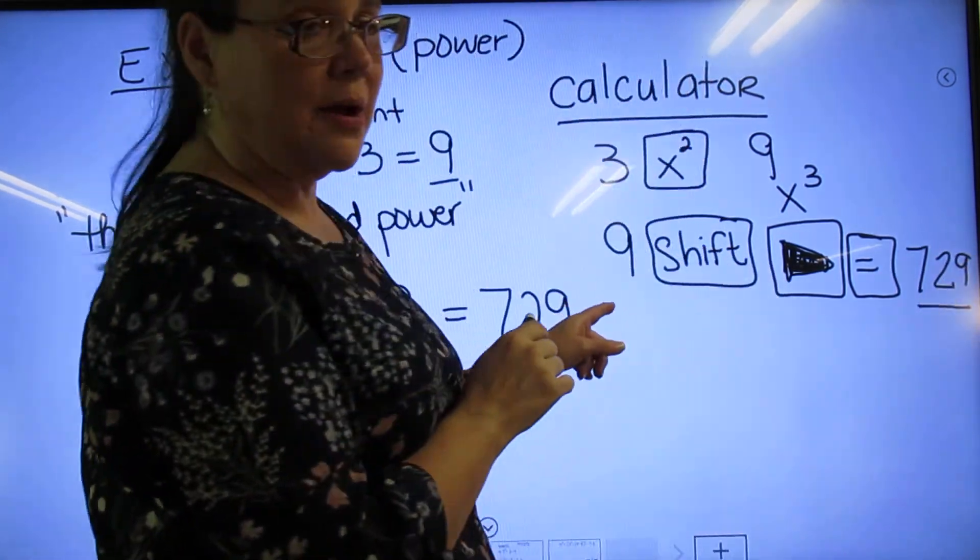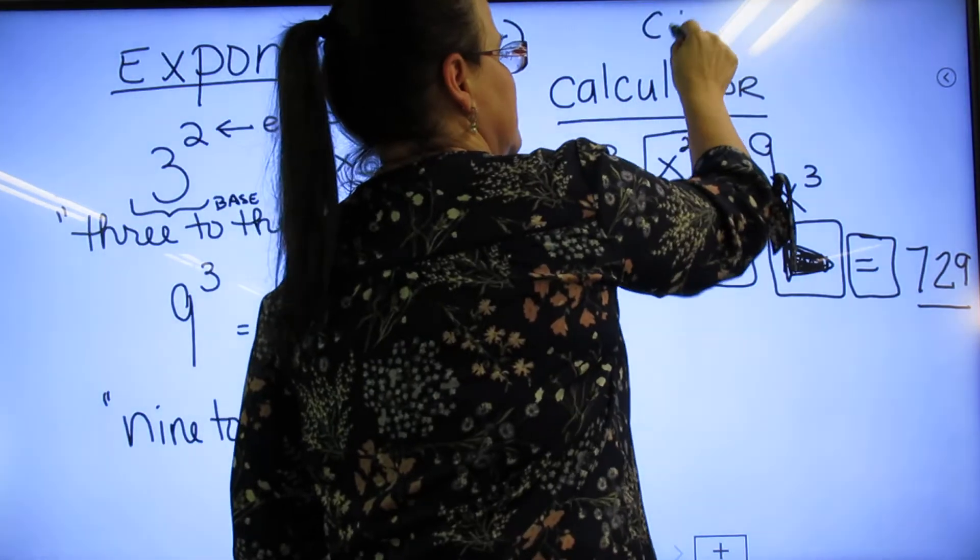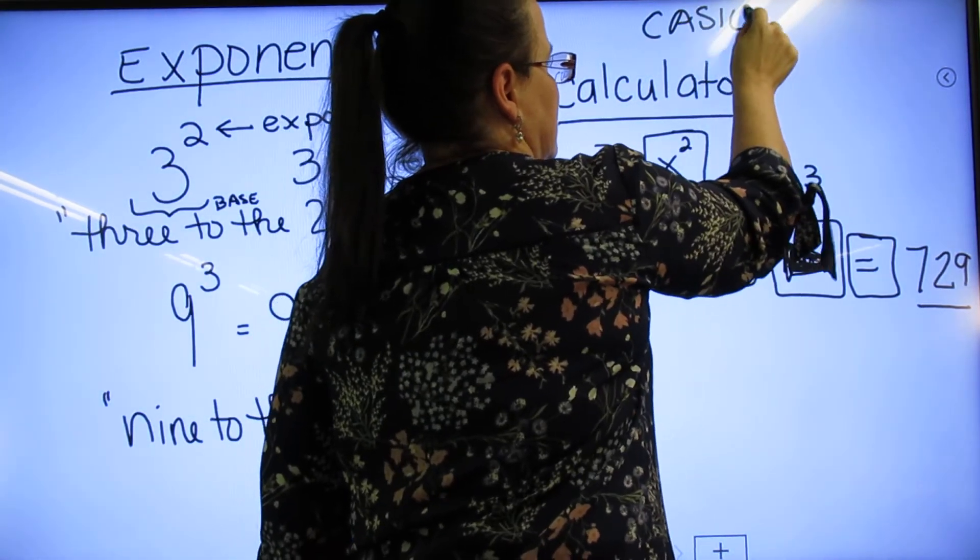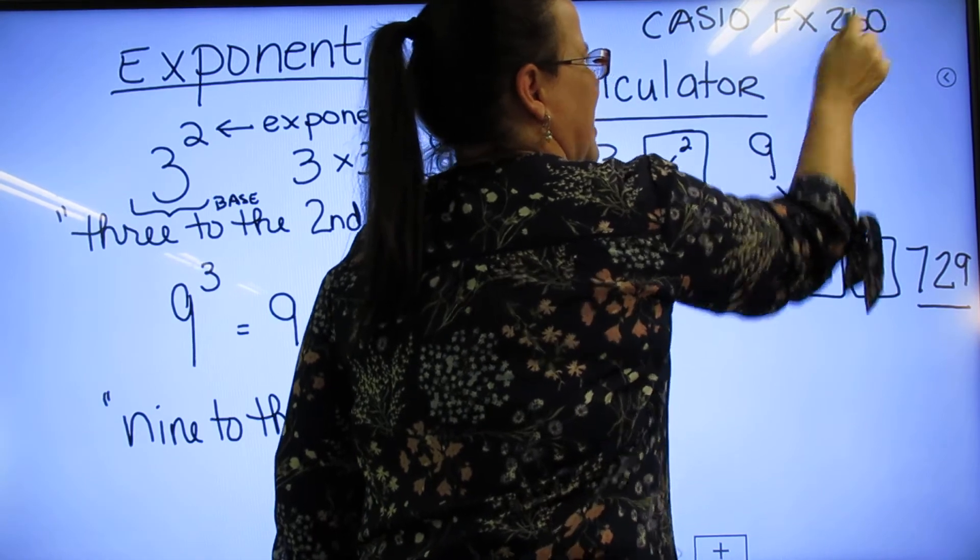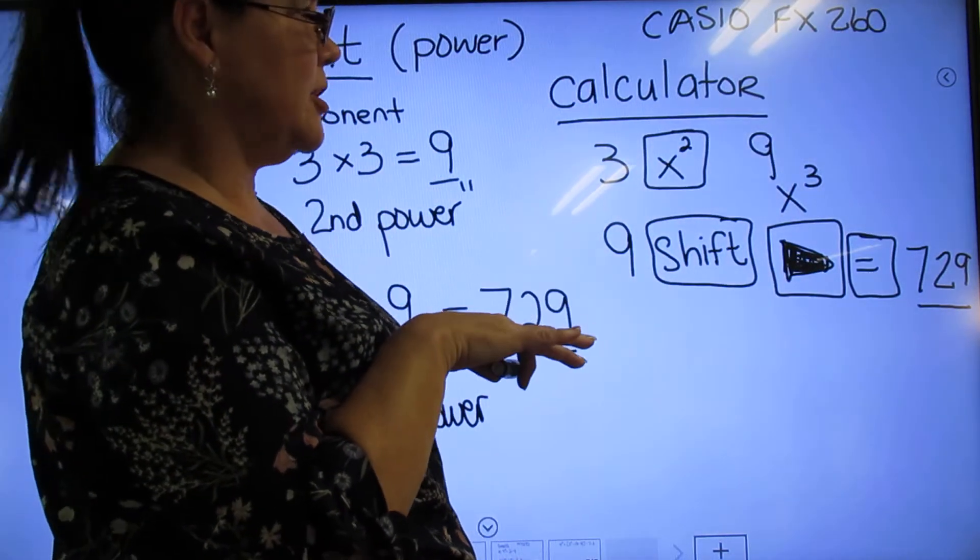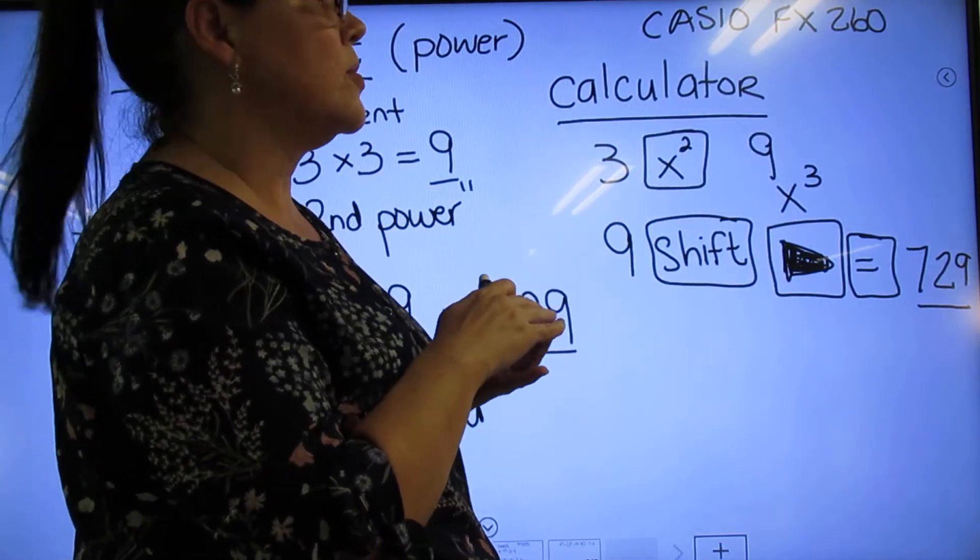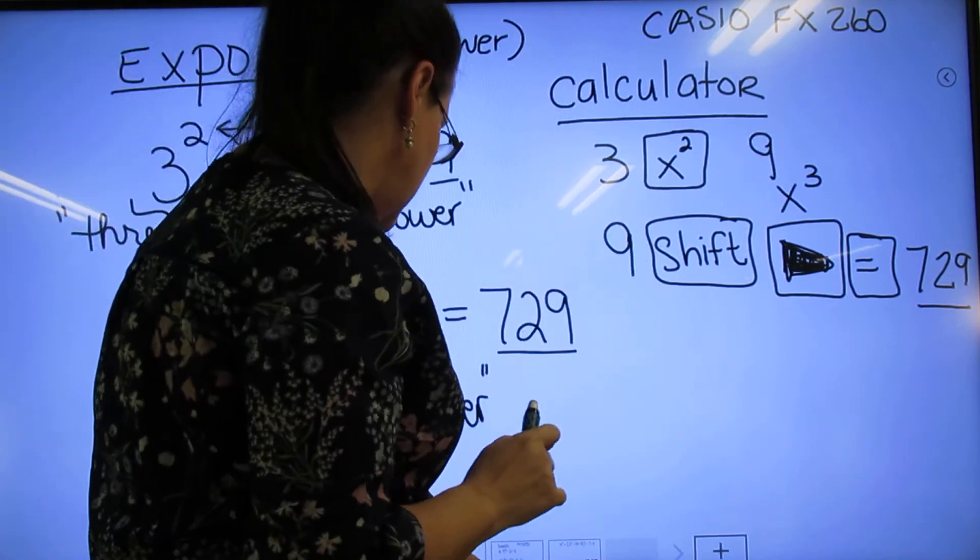The calculator we use is the Casio FX-260. I'd suggest Walmart to buy it the cheapest, and then Target or Staples next.